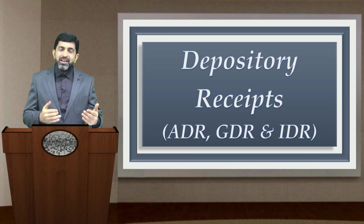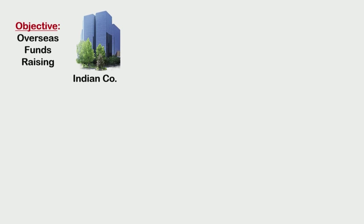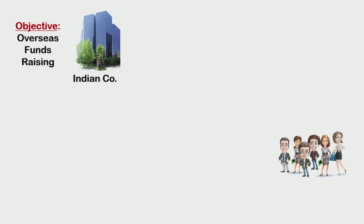Let us understand this in detail. Please look at the screen as we talk about American Depository Receipts. We follow the same situation: an Indian company has an objective of overseas fundraising, and there are investors located in the United States of America who are willing to invest in this Indian company. These investors in the USA cannot directly buy shares of the Indian company — you will need the involvement of some intermediary.